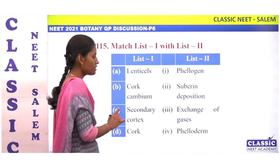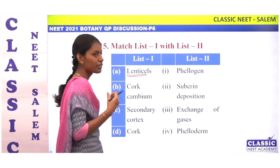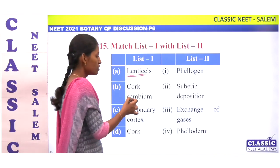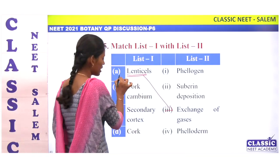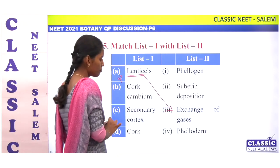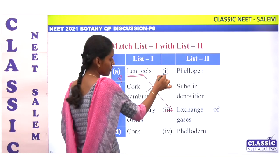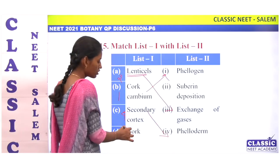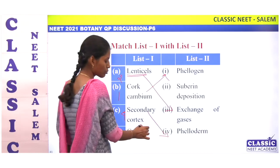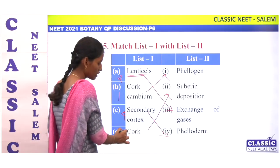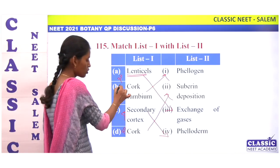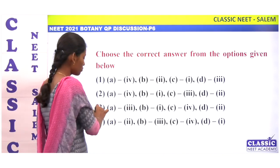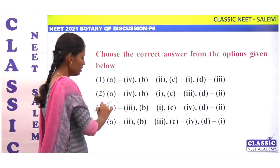Next match: lenticels are openings seen in woody stems for gaseous exchange — A is 3. Cork cambium (phellogen) produces secondary cortex (phelloderm) and cork (phellem). Cork has suberin material deposited — D is 2. So the match is 3, 1, 4, 2. Option 3.